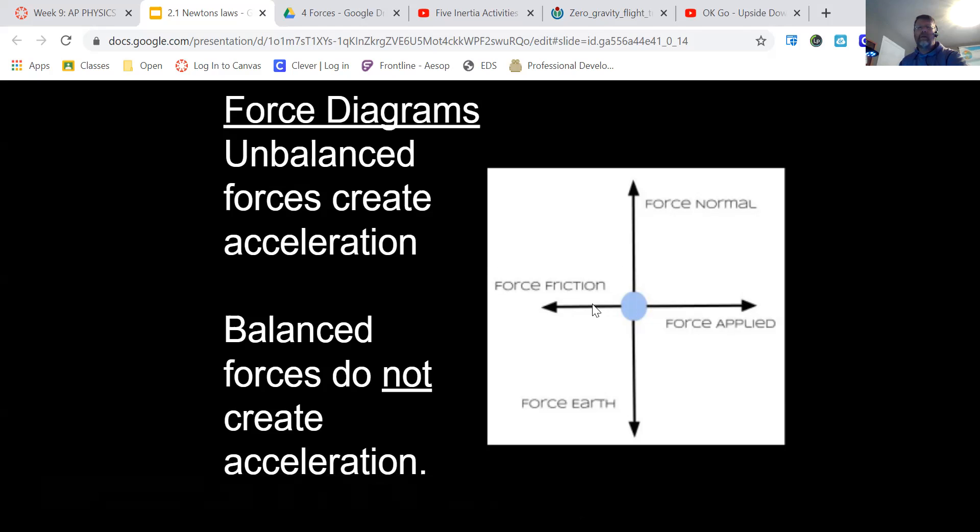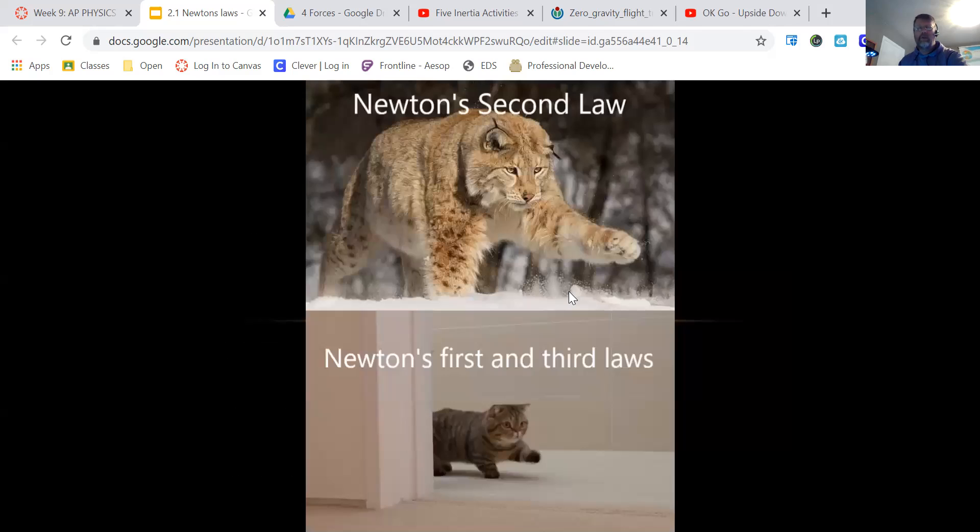So it could be moving this way and it can be accelerating this way if there's unbalanced forces. Now if these two are balanced, then it is going to be moving this way but it is not accelerating this way. Okay, but the only way I know which way the motion is is based on friction, because friction opposes motion. If this is not in the diagram, then I have to look at the question to see what motion is.